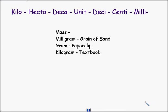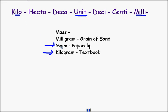Let's move on to mass. Gram is our central basic unit, and then a milligram. A gram, by the way, is about the size of a paperclip, so a grain of sand would be a milligram. A kilogram would be the size of a textbook — a thousand times the weight of a paperclip. So a thousand paperclips would weigh about as much as a textbook. These are the three measurements we frequently use when talking about the weight or mass of an item.